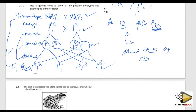Let me know in the comments: how many alleles control blood group? And how many genes control blood group? Those are two questions for you — let me see your answers while we go to the last question.